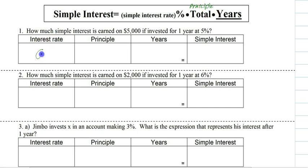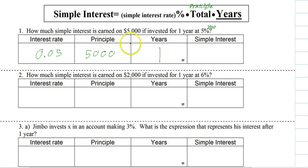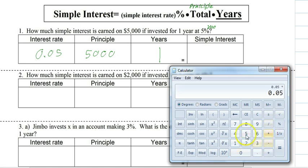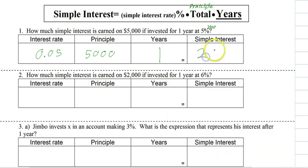The interest rate we have is 5%, and we always write it as a decimal, so we divide by 100. The principal is $5,000, and we're doing it for one year. So 0.05 times $5,000 — we don't multiply by 1 since it's only 1 year — gives us $250, and that's the amount of interest.